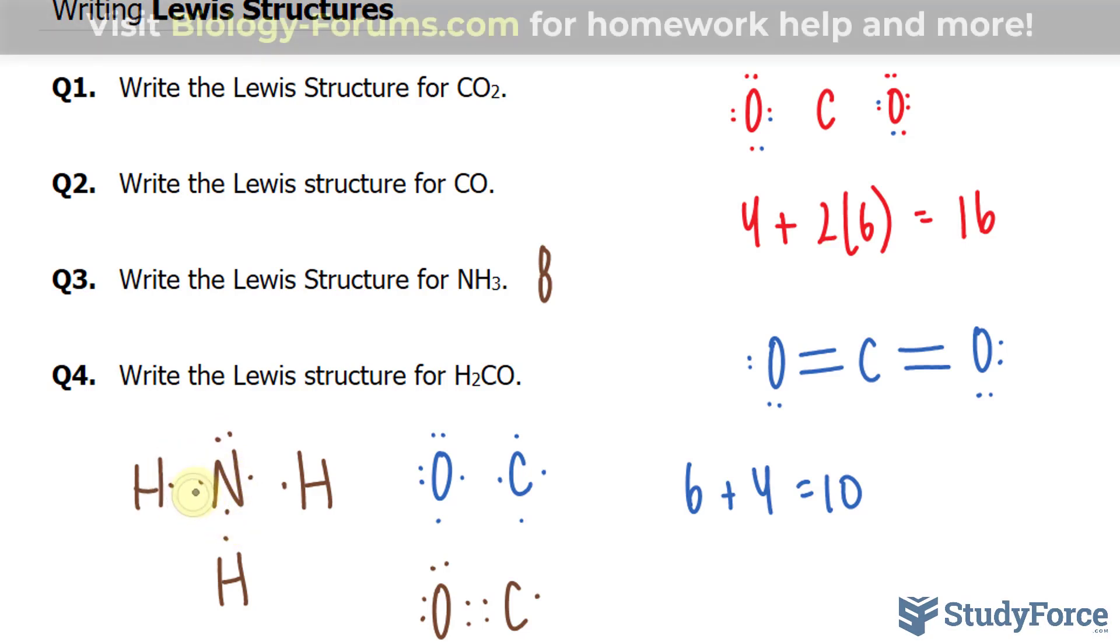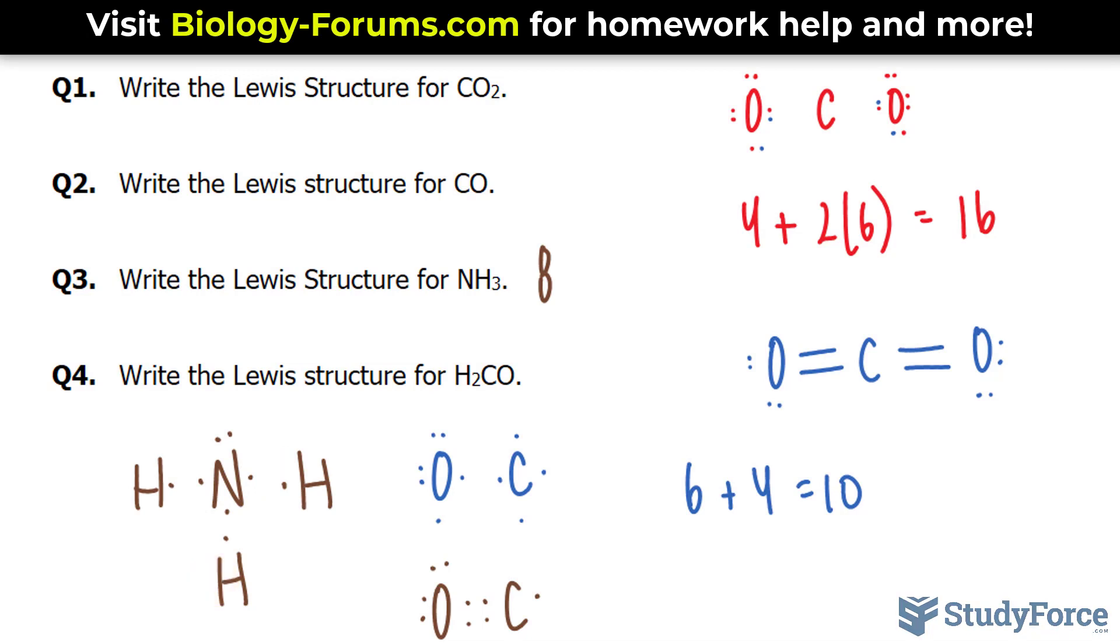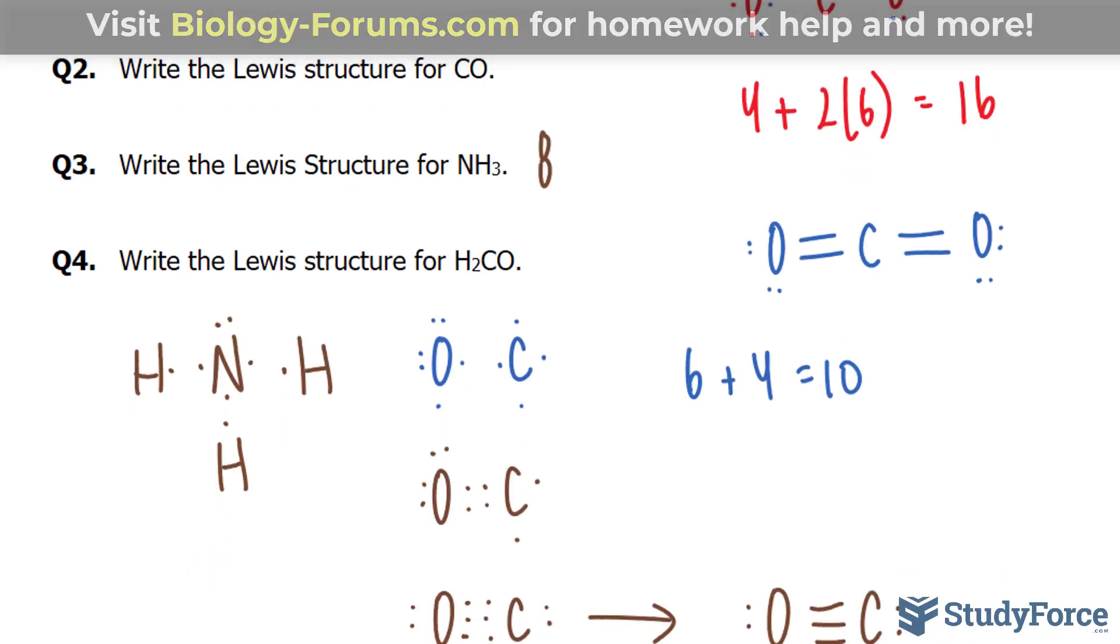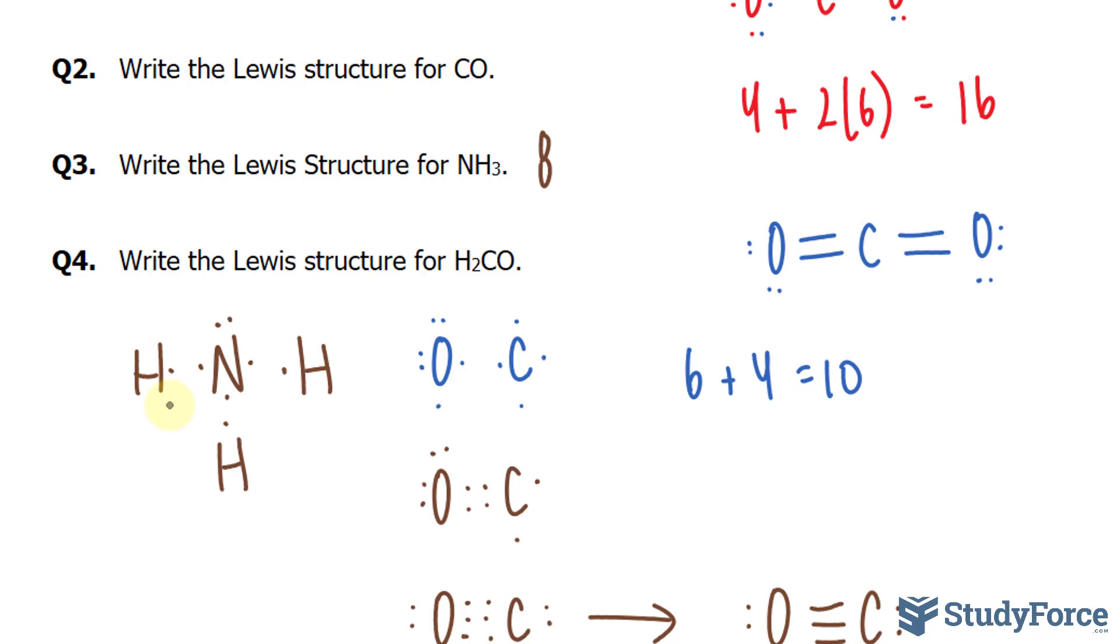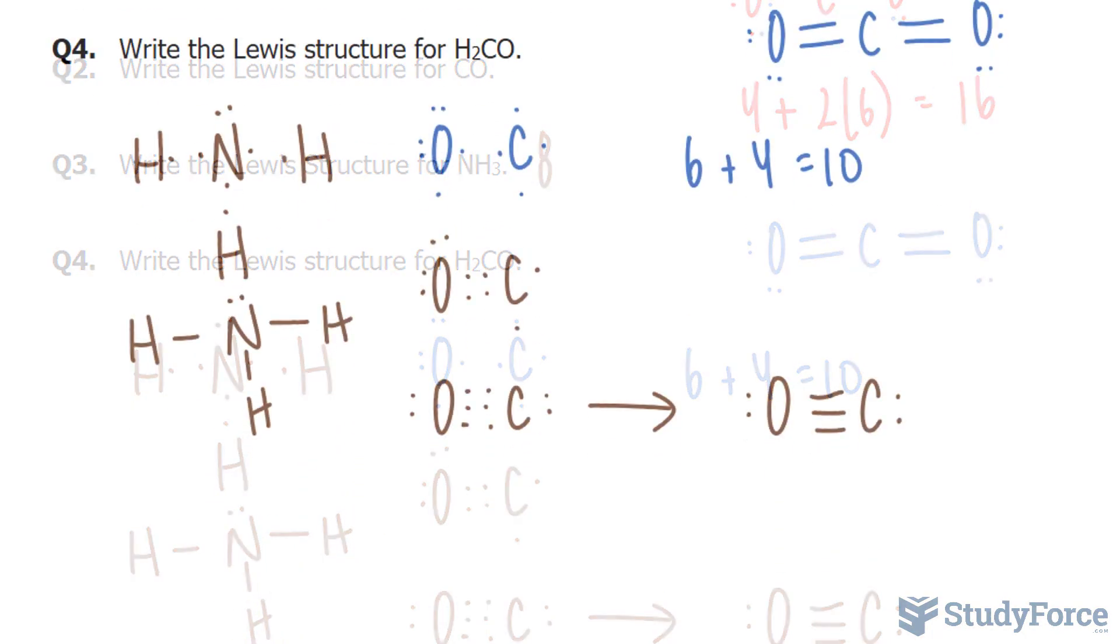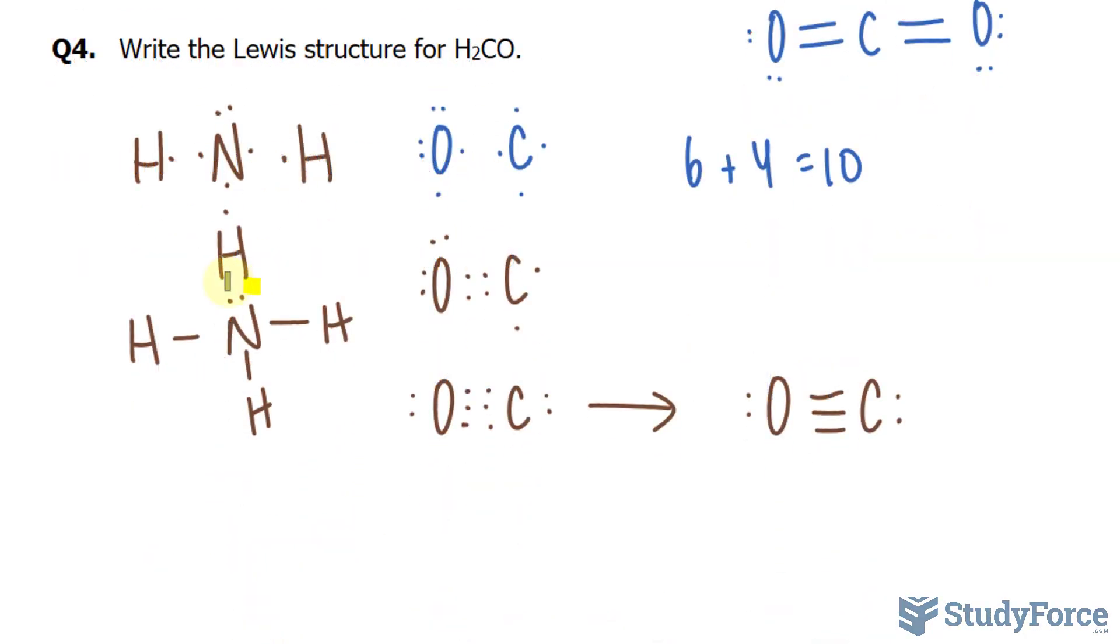This will be shared. This will be shared. And that will be shared. So let's see if all of them have a full octet. Hydrogen has 2. That constitutes a full octet because hydrogen only requires 2 electrons to satisfy it. Nitrogen has 8 electrons. That works. And this hydrogen has 2, and this one has 2. Therefore we can write this as H line N with those 2 electrons. Another H and another H. That's the answer to question number 3, specifically what I'm highlighting.